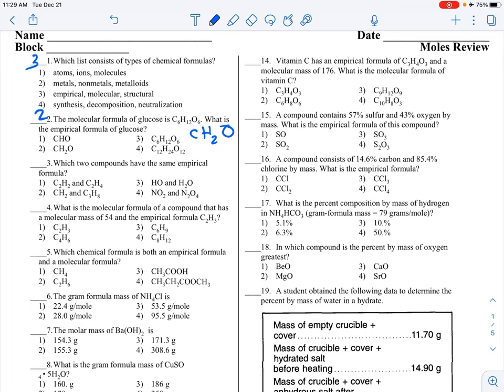Which two compounds have the same empirical formula, meaning which would simplify down to the same thing. If I took choice one, if I took a 2 out of both, that would be CH. This would be CH2, so it can't be that one. That's a 1 to 2 ratio. This is not. Number three, a 1 to 1 ratio and a 2 to 1, nope. A 1 to 2 ratio and a 2 to 4 ratio, that is the same thing.